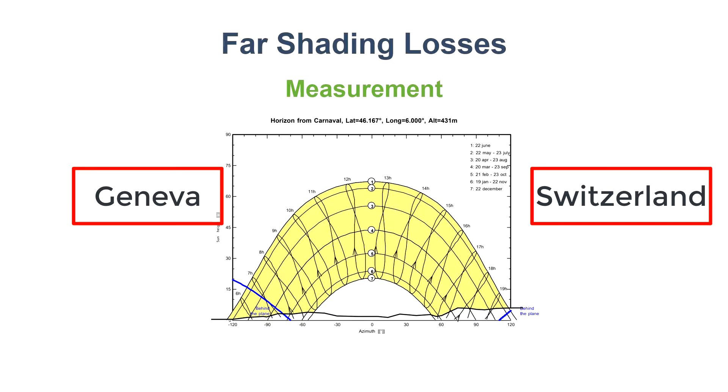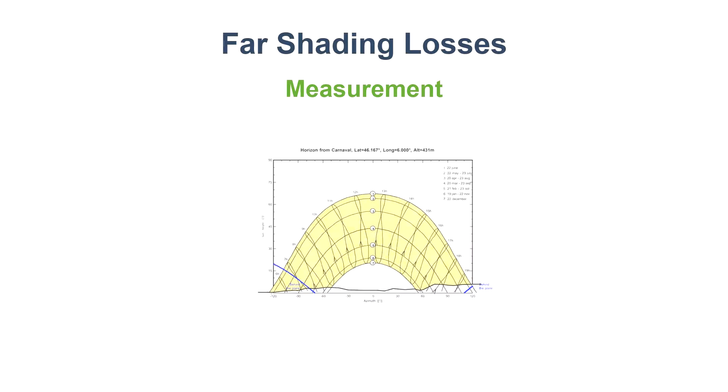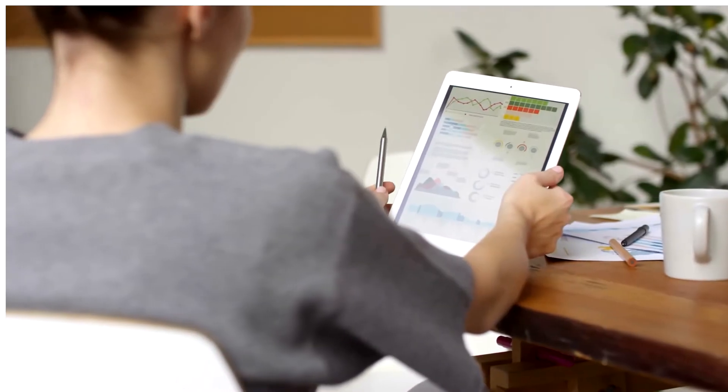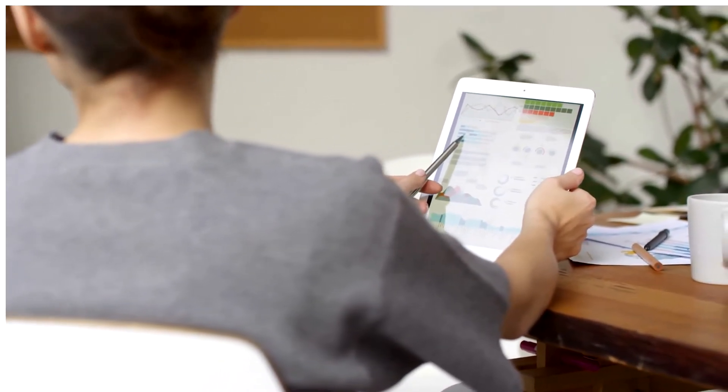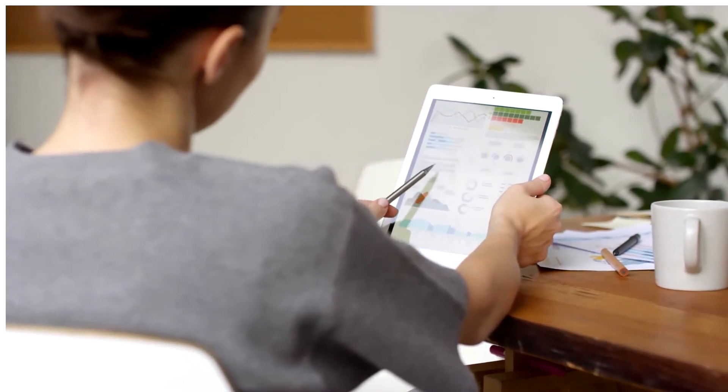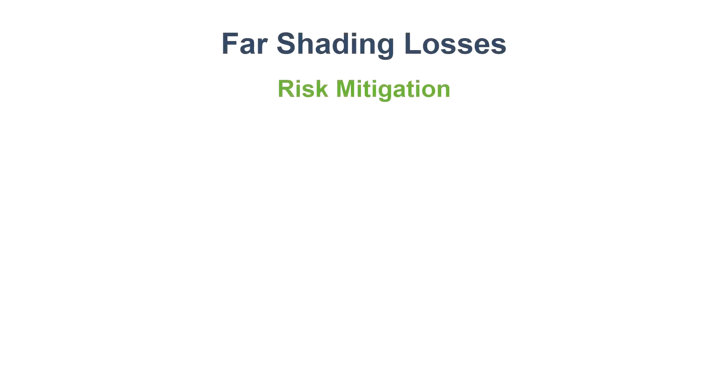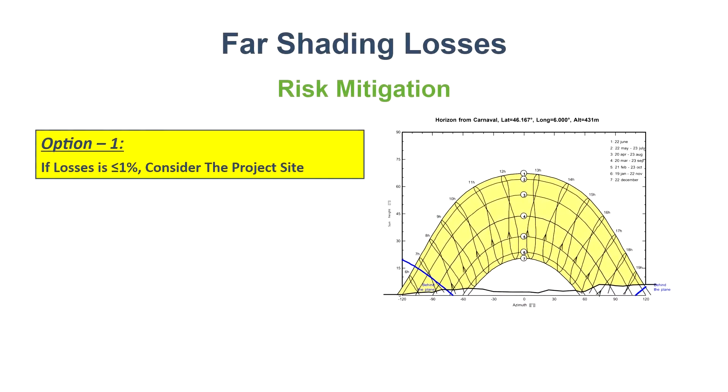Now how you should mitigate far shading losses from your PV system? Well, while such shadows could be predicted to a fair accuracy, a designer could hardly do anything to mitigate this. She has only two options in such cases. First, she has to get the horizon profile and analyze the amount of far shading loss happening annually.